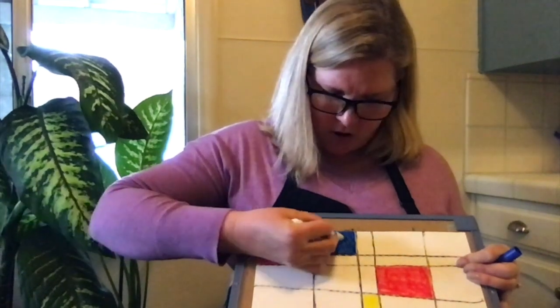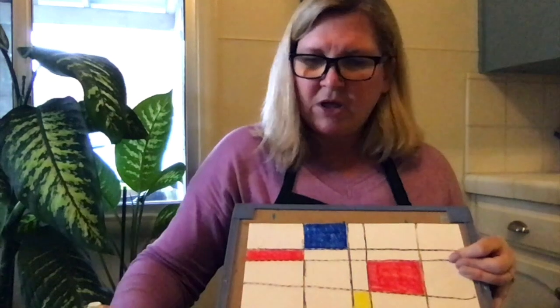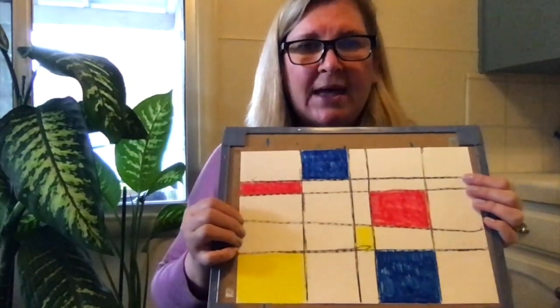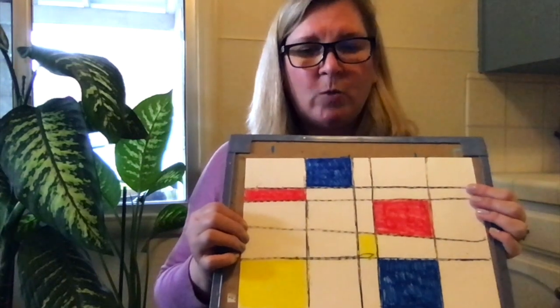There we go. Now we have all of the primary colors in our picture, just like Piet Mondrian used to. We've got red, we've got yellow, we've got blue.